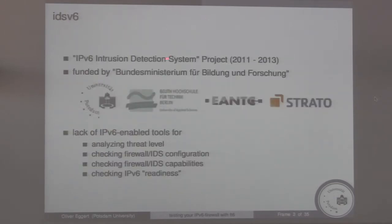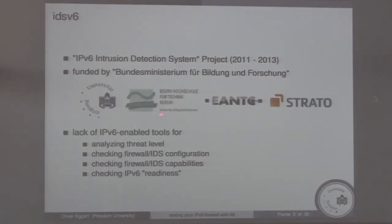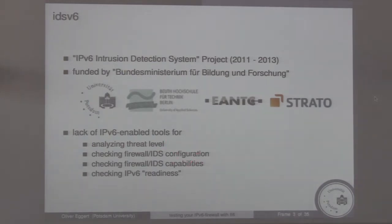IDSv6 is the IPv6 Intrusion Detection System project. It was done from 2011 to 2013 at the University of Potsdam. It was funded by the Bundesministerium für Bildung und Forschung, which is the Federal Ministry for Education and Research. We cooperated with the Beuth Hochschule für Technik in Berlin, the University of Applied Sciences, with the people from ANTC, and Strato was also an associated partner.